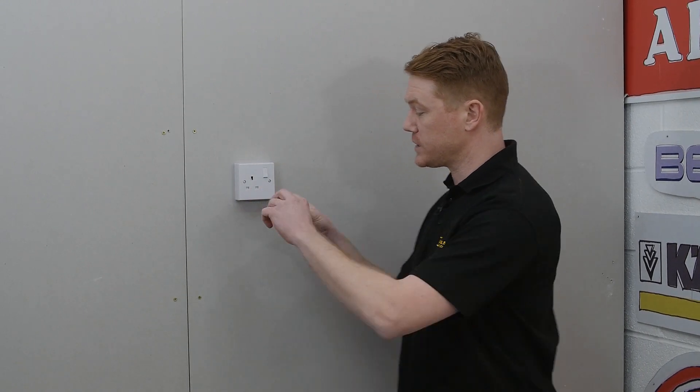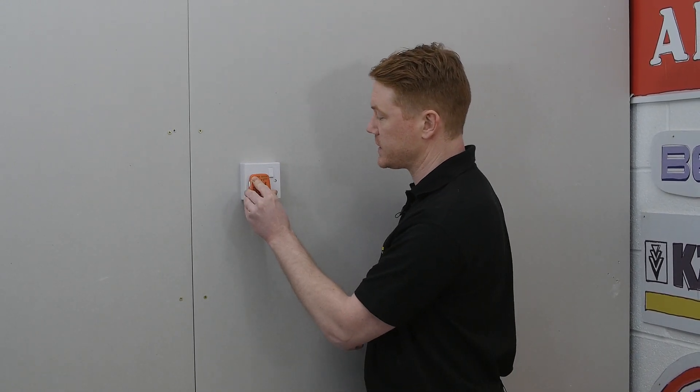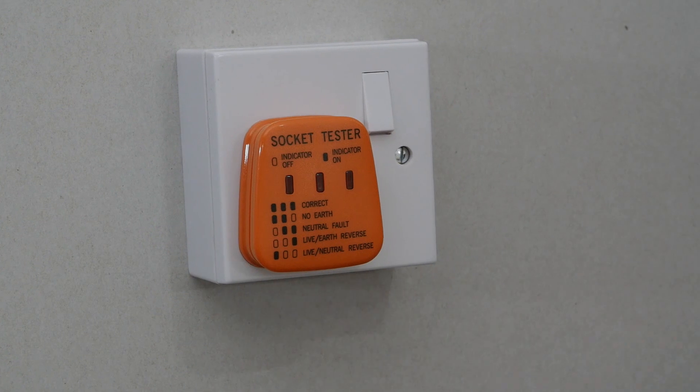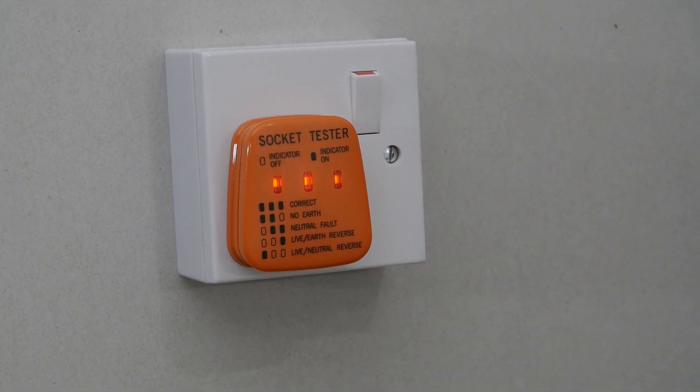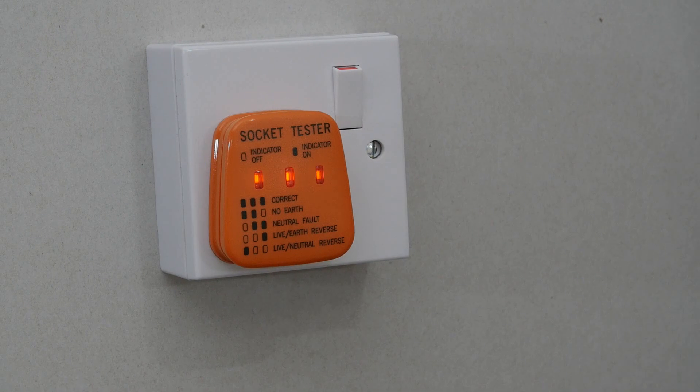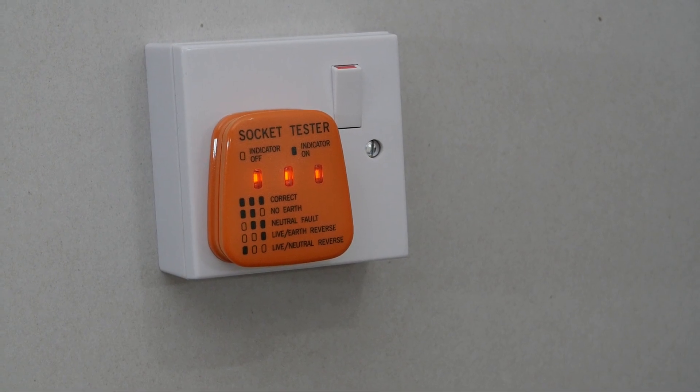The next best thing to do is to make sure that the switch is working correctly, and a great way to do that is to plug in this socket tester. If I put the power to the wall socket, all three lights illuminate, which means that this socket is wired in correctly.